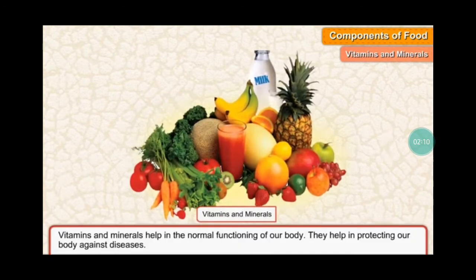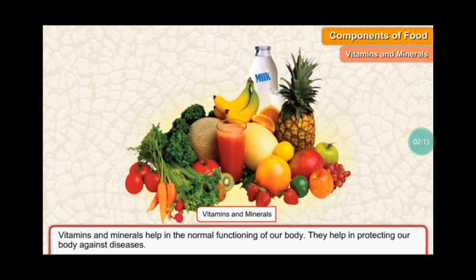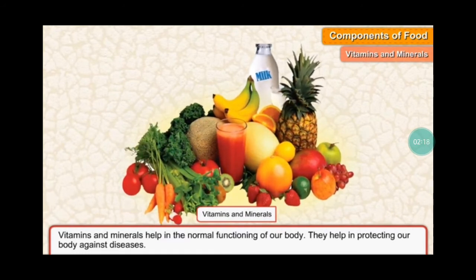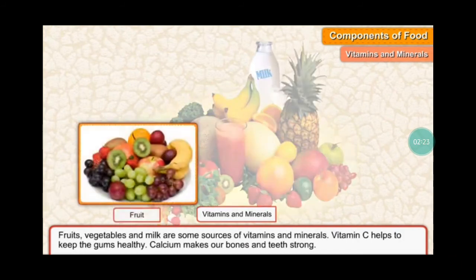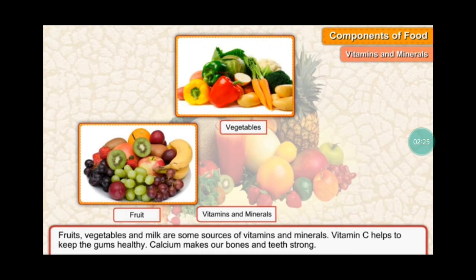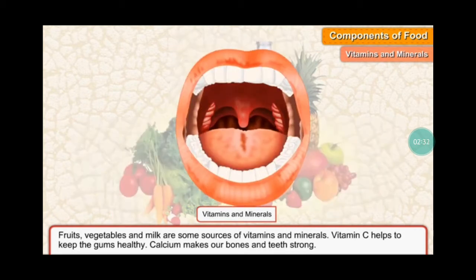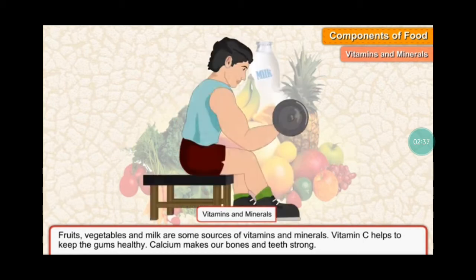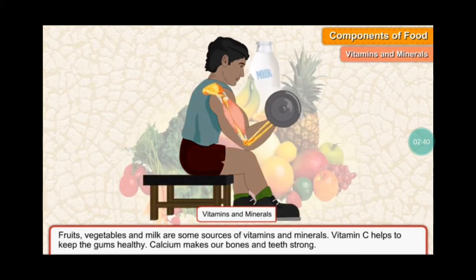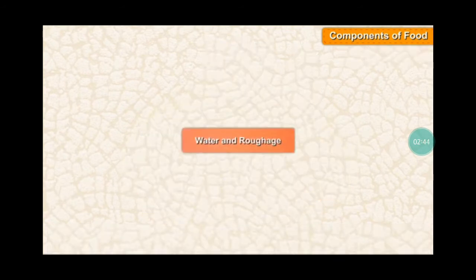Vitamins and minerals help in the normal functioning of our body. They help in protecting our body against disease. Fruits, vegetables, and milk are some sources of vitamins and minerals. Vitamin C helps to keep the gums healthy, and calcium makes our bones and teeth strong.